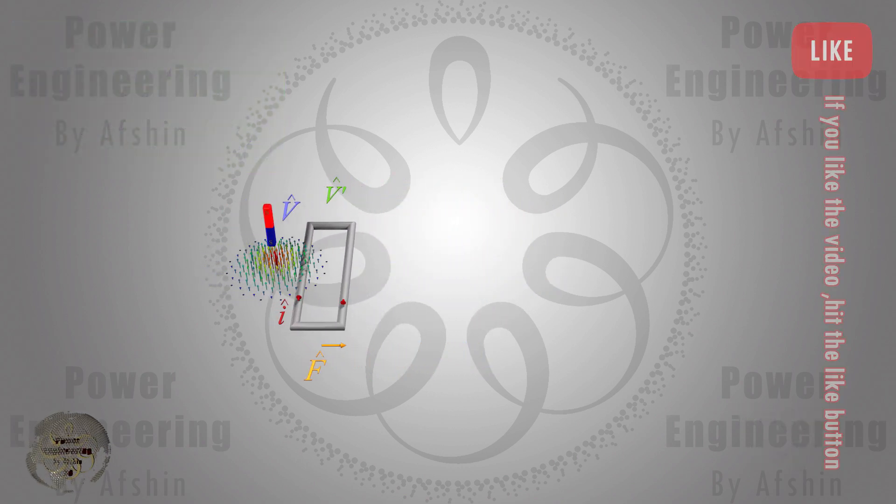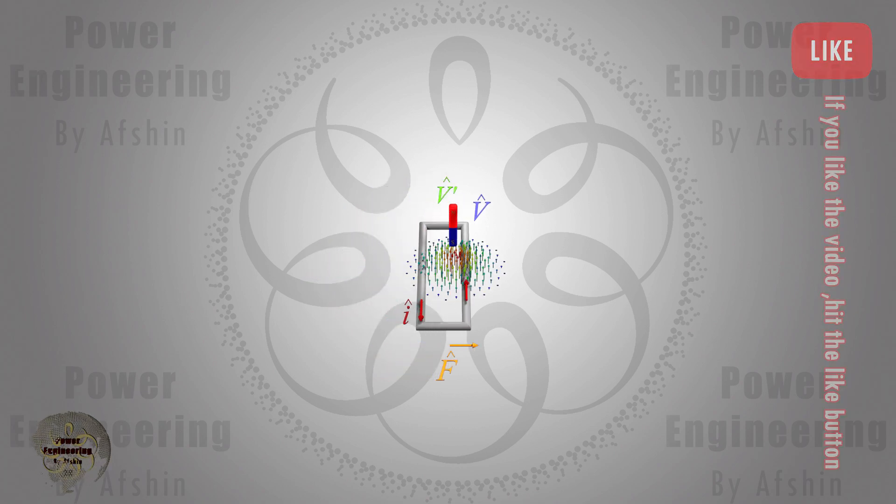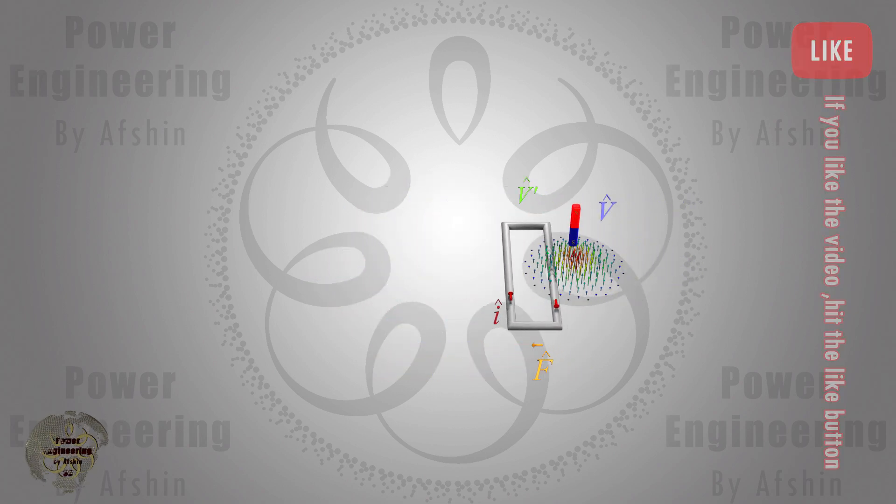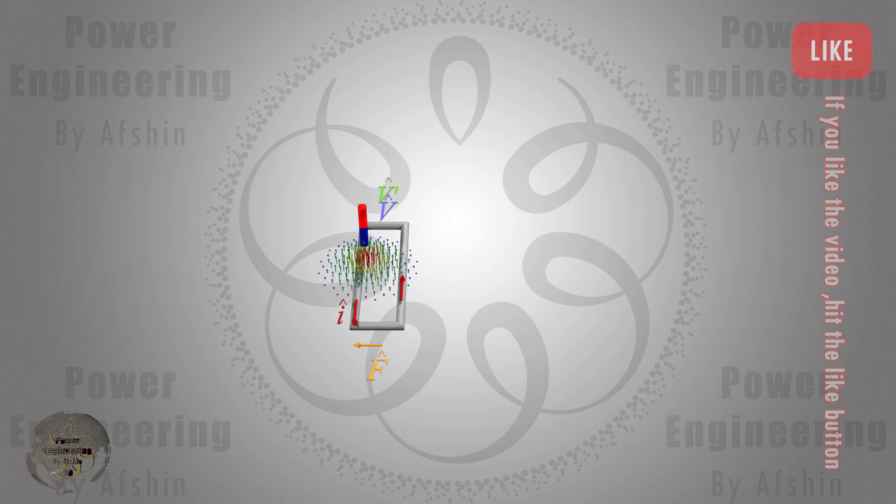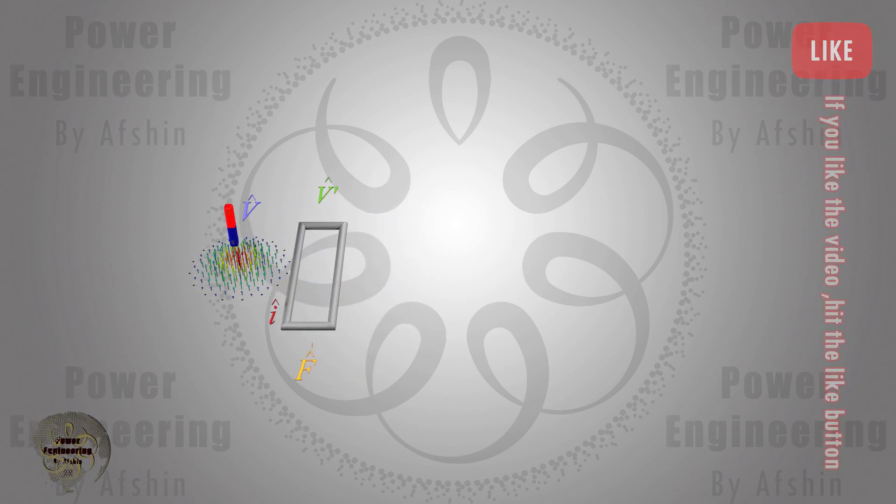With the onset of the electromagnetic force, the loop accelerates in the direction of the magnetic field's motion, overcoming friction to enter into motion.